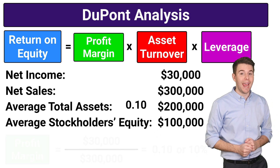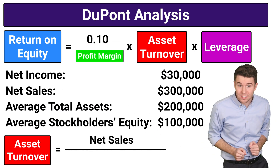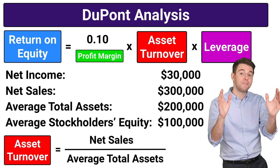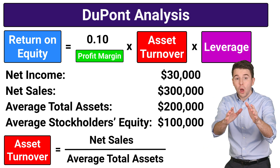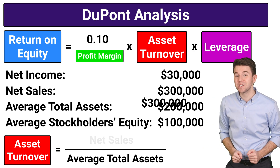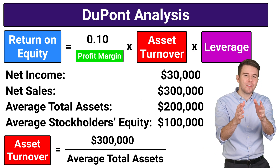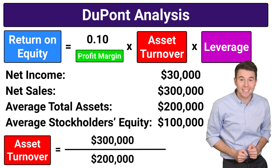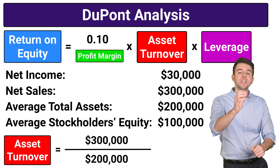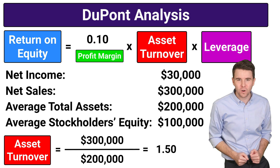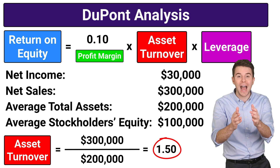Next, Asset Turnover is computed as net sales divided by average total assets. So we take net sales of $300,000 and divide by average total assets of $200,000, to get an asset turnover of 1.5.